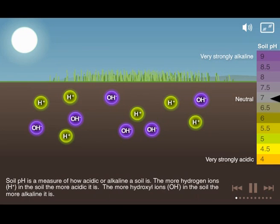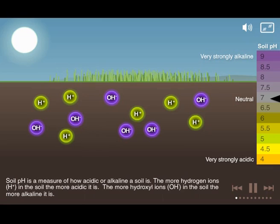pH is a measure of how acidic or alkaline a soil is. The more hydrogen ions in the soil, the more acidic it is. The more hydroxyl ions in the soil, the more alkaline it is.